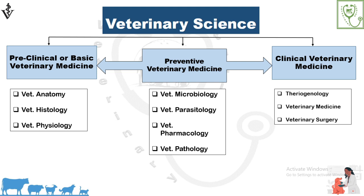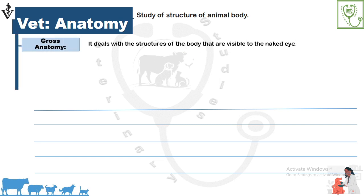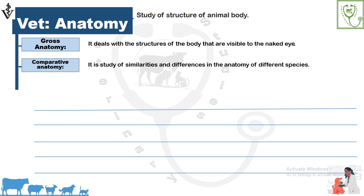Veterinary anatomy is the scientific study of the structures of an animal body. Veterinary anatomy includes gross anatomy, in which we study about the structures which we can see by our naked eye, such as bones, muscles, etc.